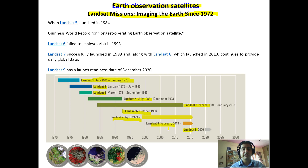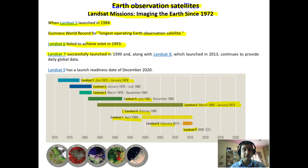The latest was Landsat-9, launched in 2020. Landsat-5 was launched in 1984 and became a Guinness World Record holder for the longest operating earth observation satellite, remaining operational from 1984 to January 2013 — a pretty long time. Landsat-6 failed to achieve orbit. Landsat-7 was successfully launched in 1999, and along with Landsat-8, which launched in 2013, continues to provide daily global data.